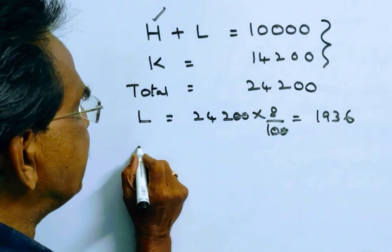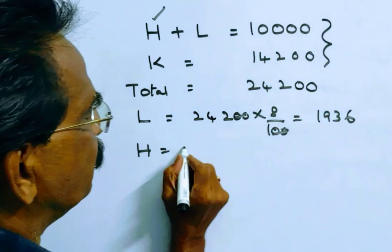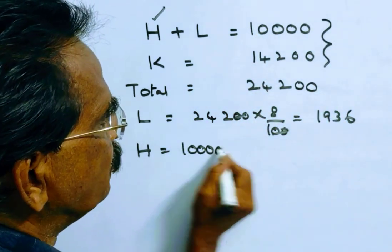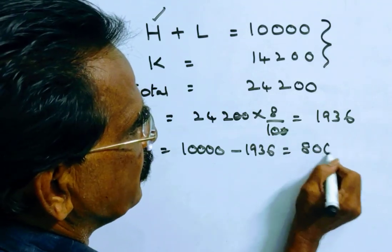And Hari gets 10,000 minus Lalith votes. 10,000 minus 1936, that is equal to 8,064.